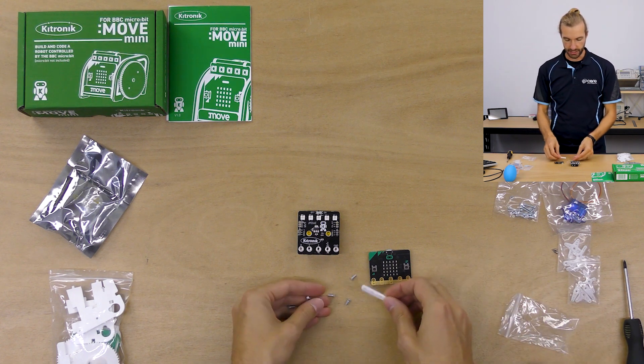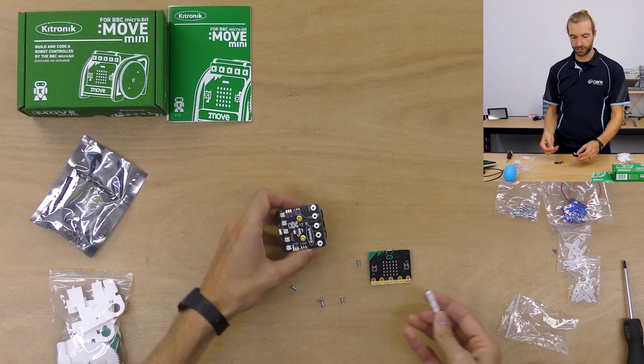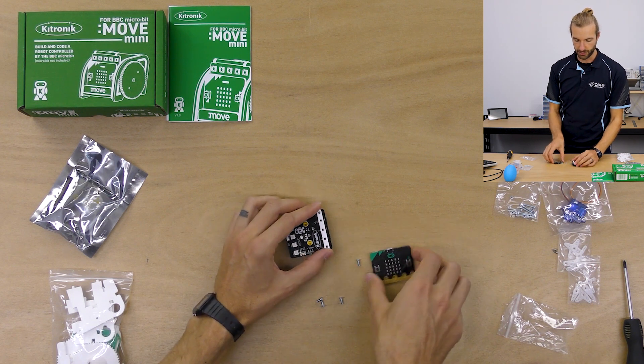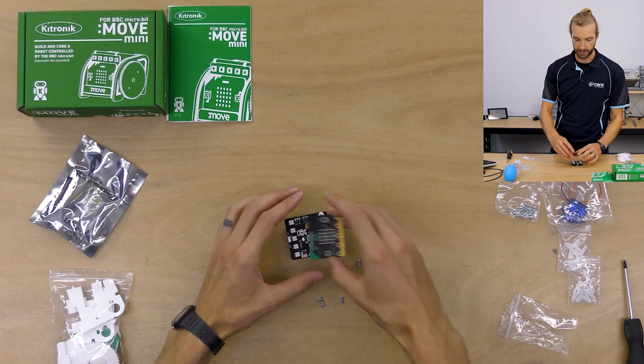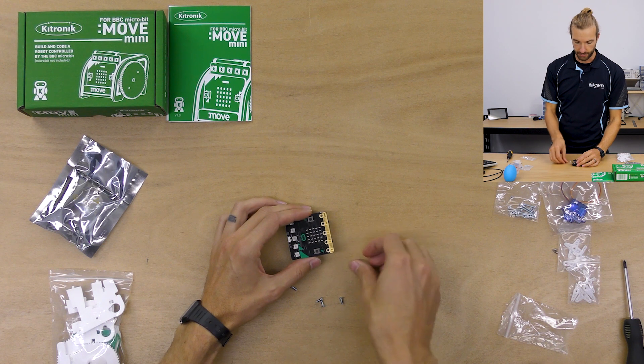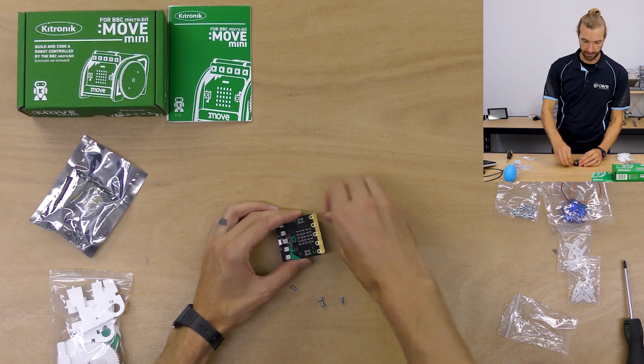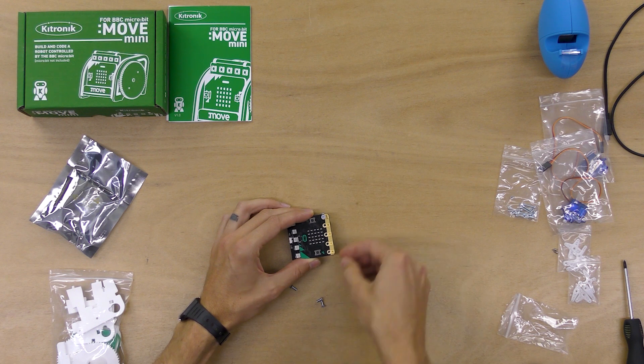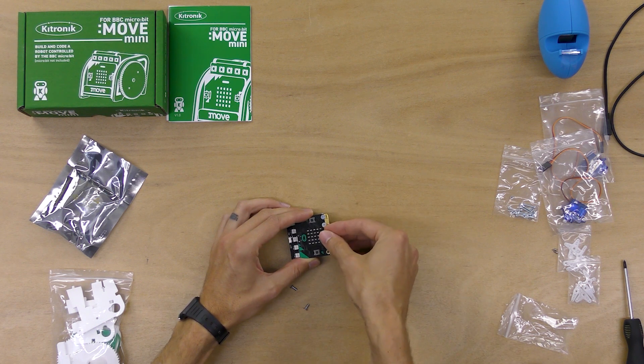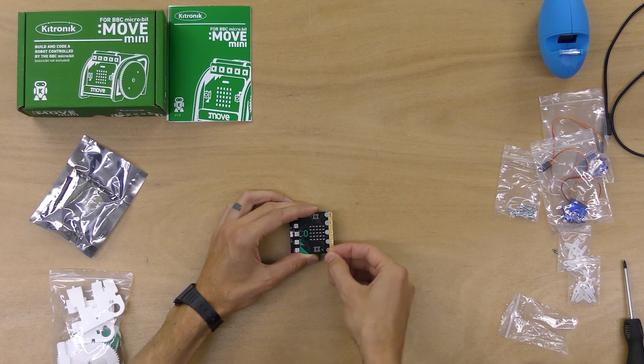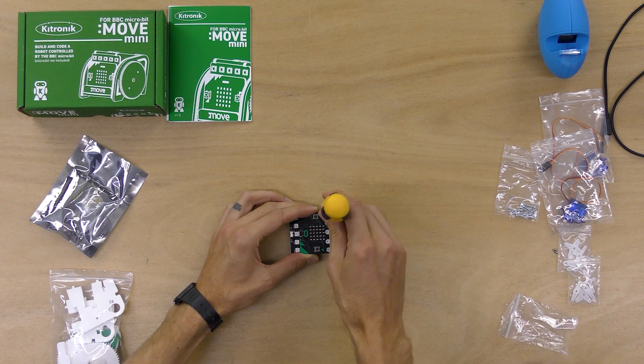We're going to just attach the micro bit to the servo light board. Be sure to insert the spacer between the micro bit and the servo light board. It's good practice to get every screw started before tightening any one down because if you tighten one down all the way first, it may cause the board to seat at an angle.